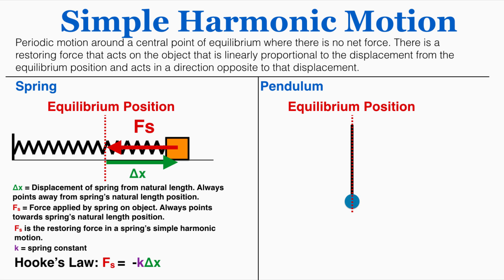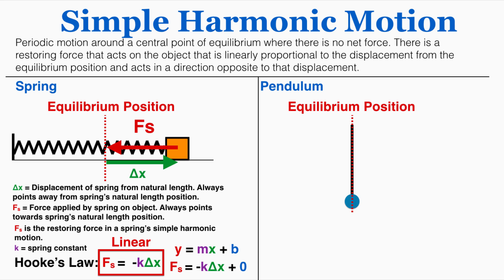Looking back at the definition of simple harmonic motion, there is a restoring force that acts on the object that is linearly proportional to the displacement from the equilibrium position and acts in a direction opposite to that displacement. Here, Fs is playing that role — it gets bigger as the displacement from the equilibrium position gets bigger, and it pushes back toward equilibrium in the opposite direction. Hooke's law is linear because it obeys the form y = mx + b, where negative k is the slope and 0 is the y-intercept. So a spring fits the definition of simple harmonic motion.